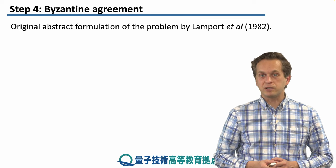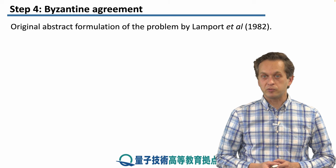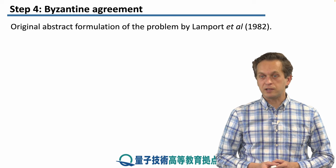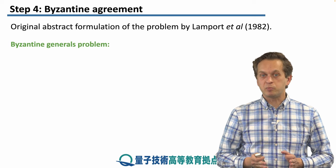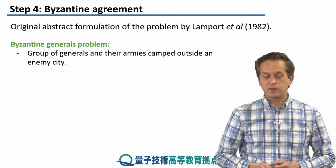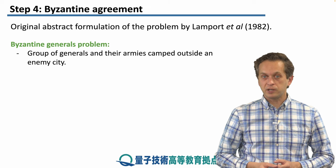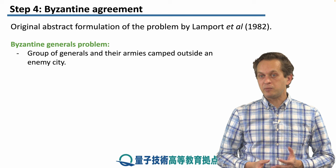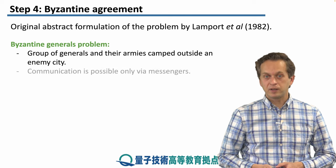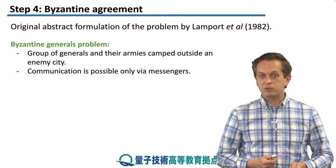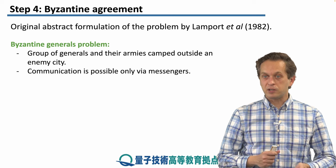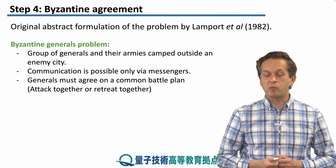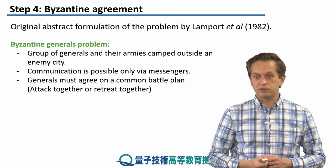Now we're going to present the original abstract formulation of the problem, formulated by Lamport and collaborators in 1982 — the Byzantine generals problem. There is a group of generals and each general has an army. They are camped outside of an enemy city and waiting to attack. The problem is that they have to communicate between each other with messengers, and they have to decide on a common battle plan: do we all attack or do we all retreat?